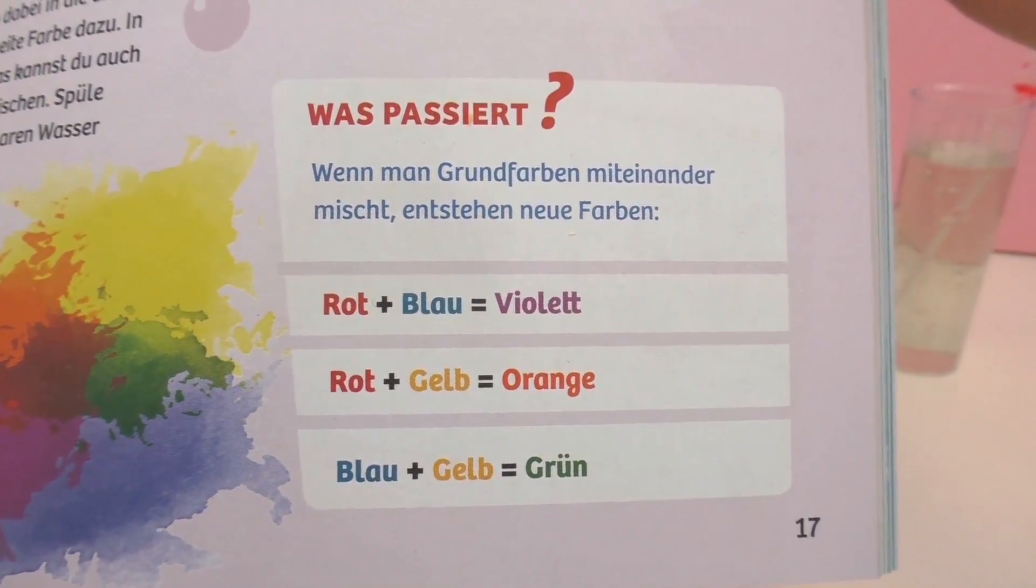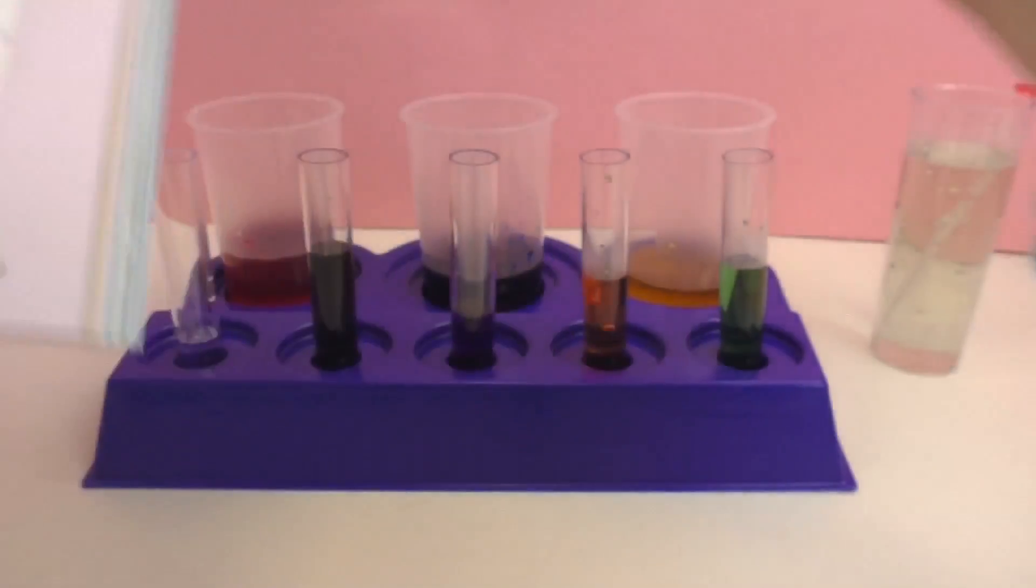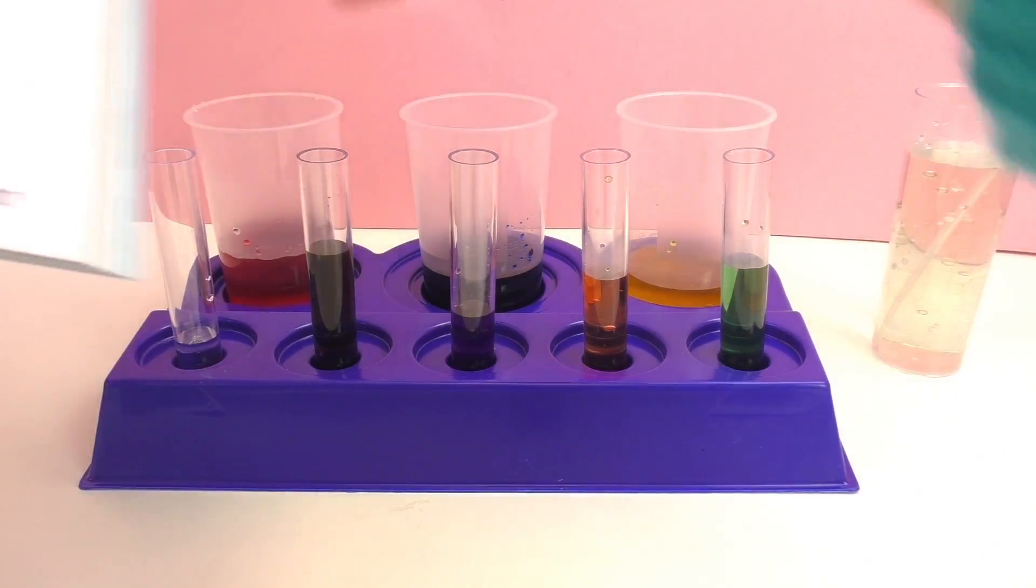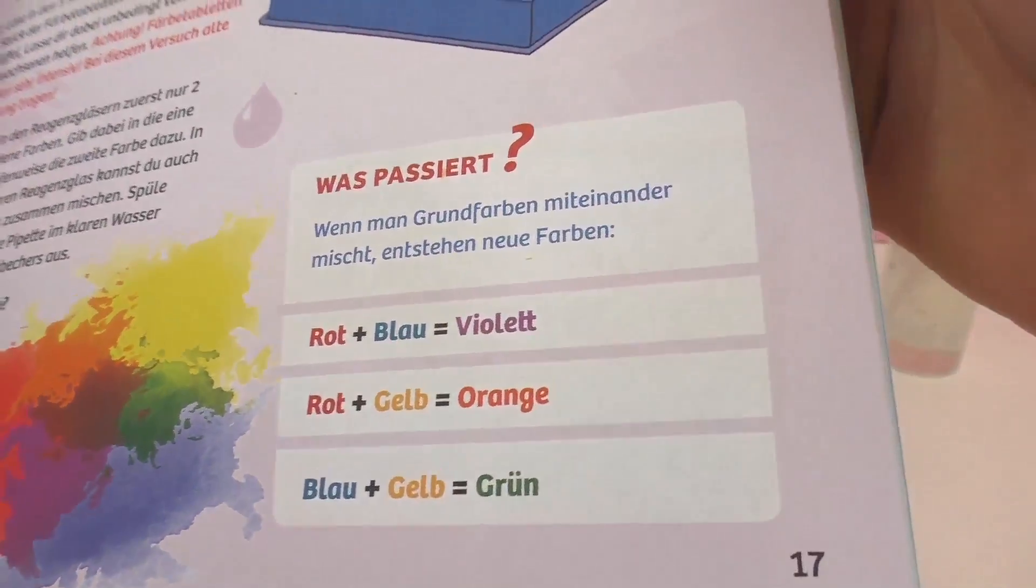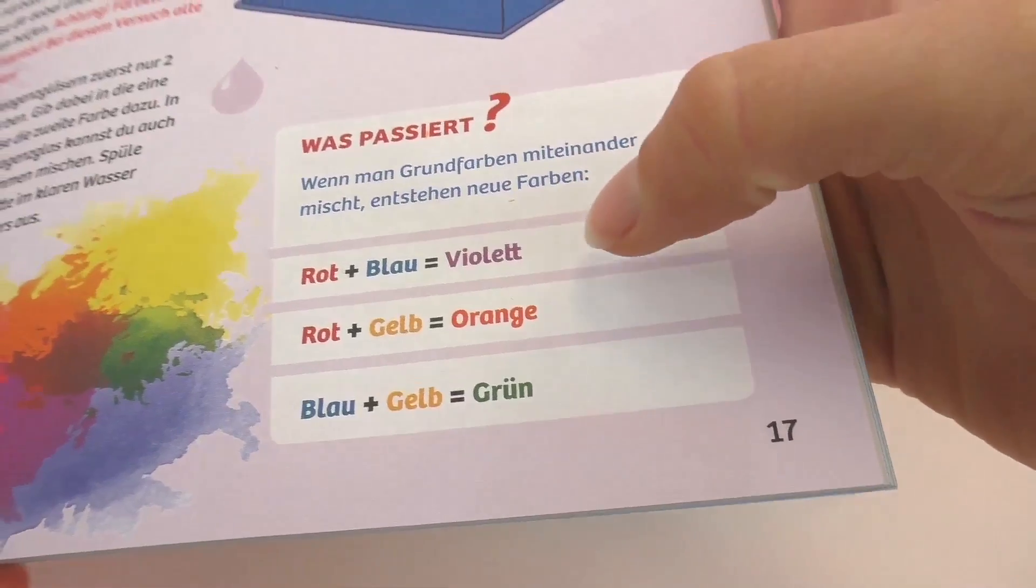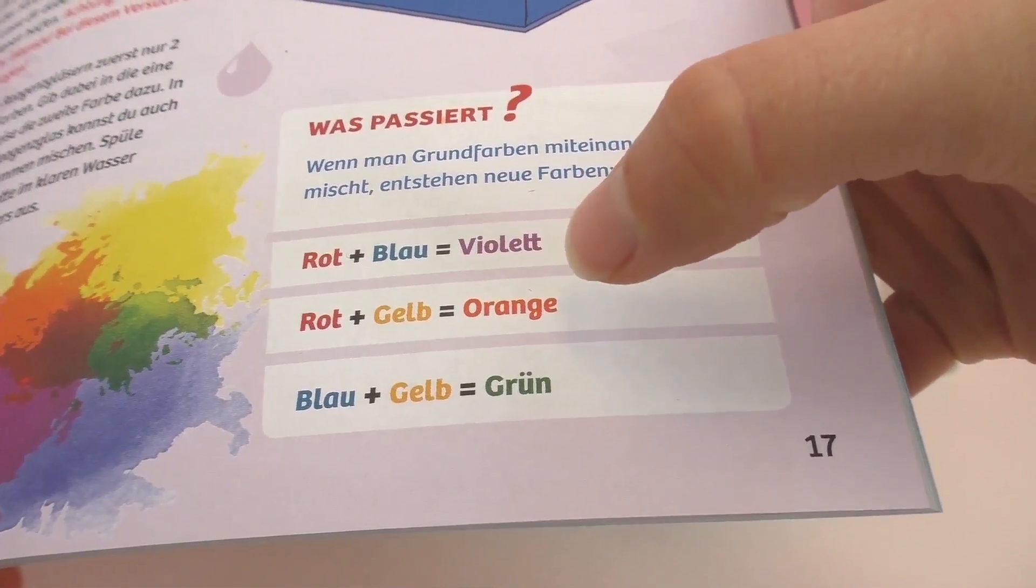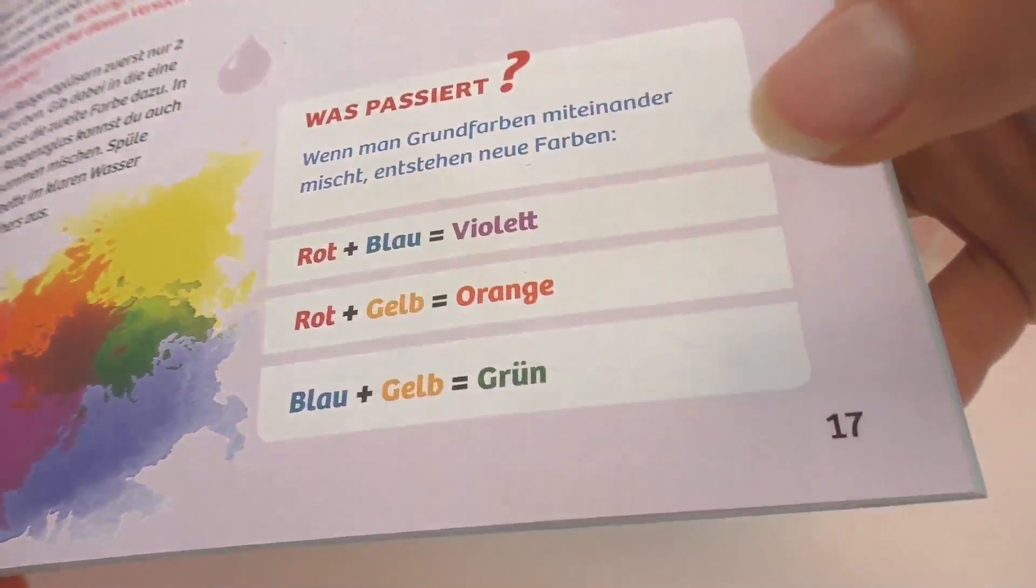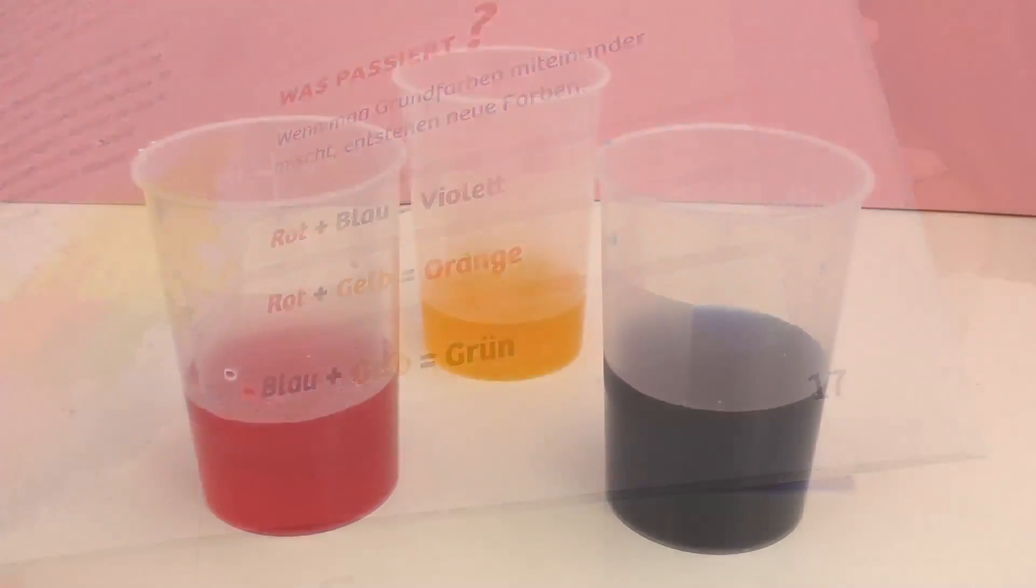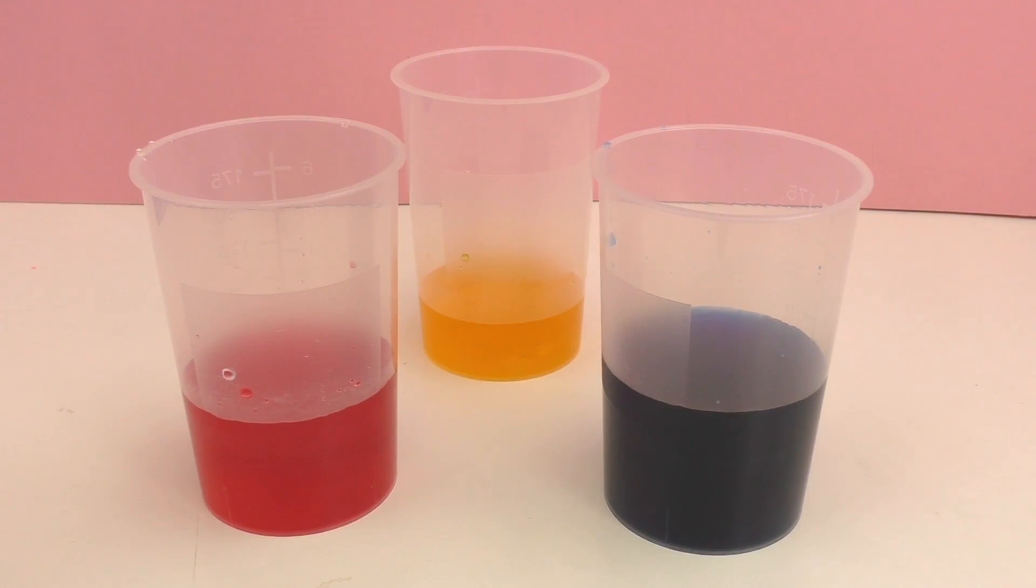Here in the instruction book we can see what happens when you mix new colors together. And as you can see it tells us the same thing. So what happens when you mix together primary colors? Red and blue is going to get you violet or purple. Red and yellow is going to give us orange. And blue and yellow is going to give us green.